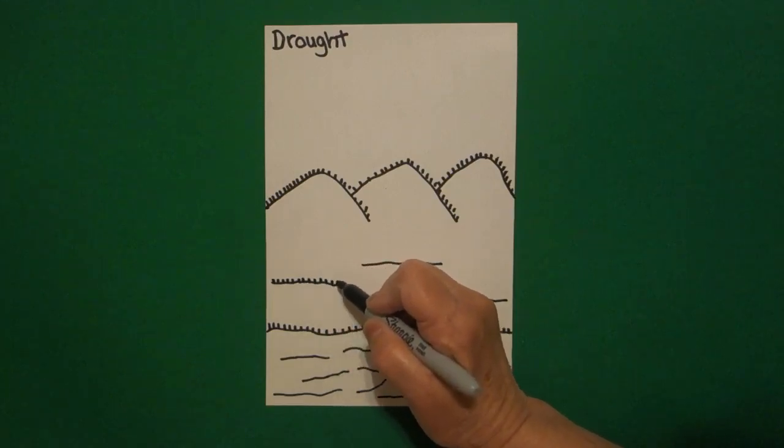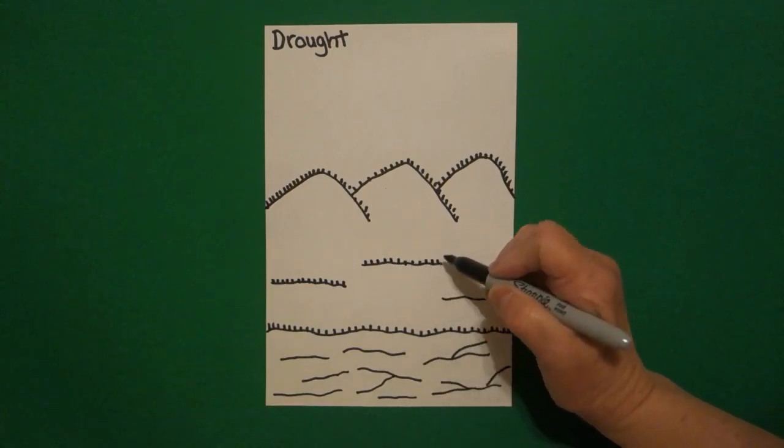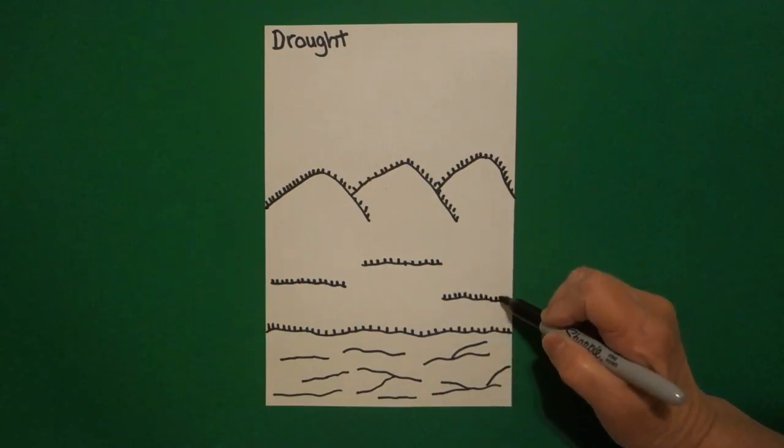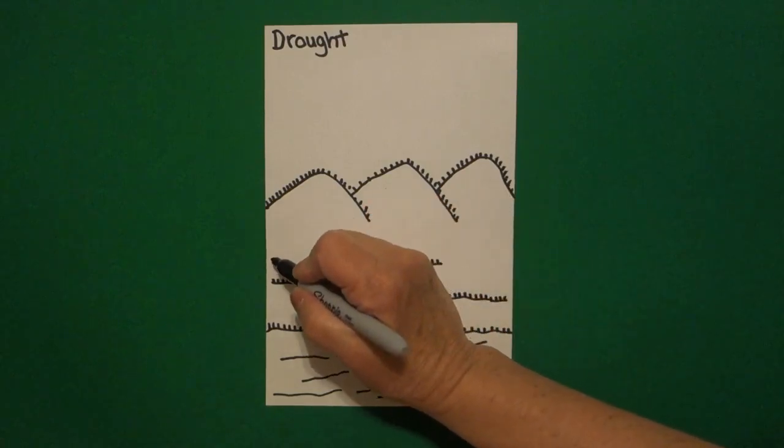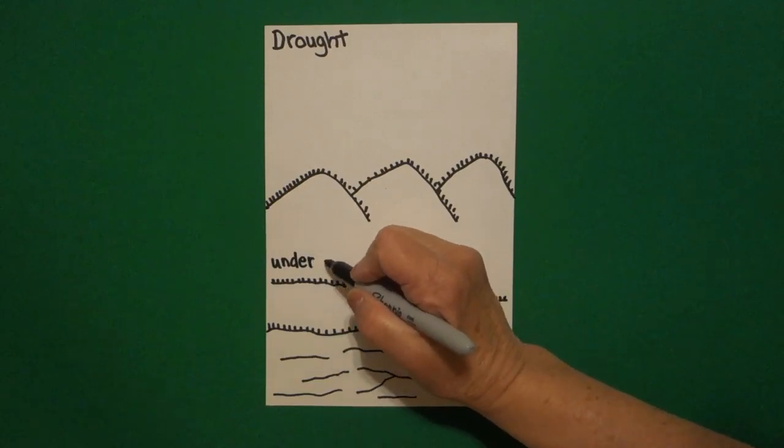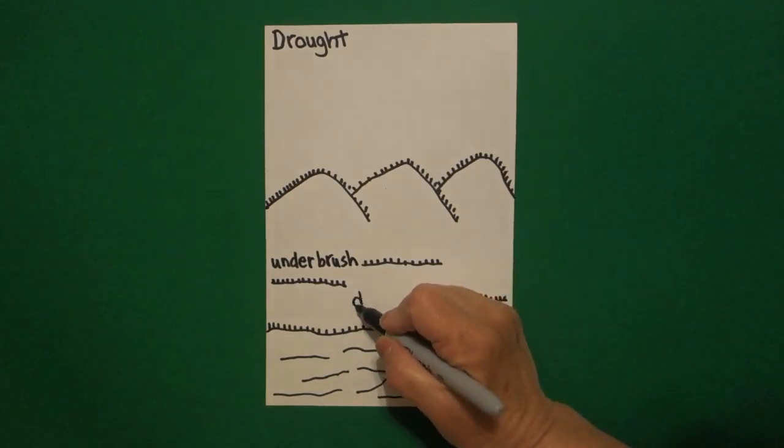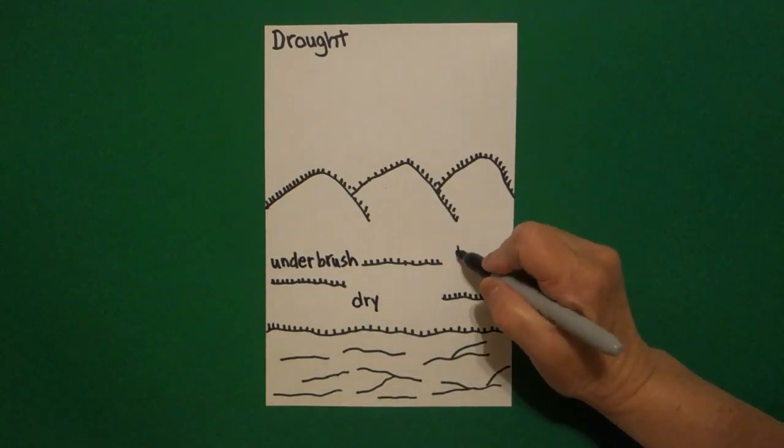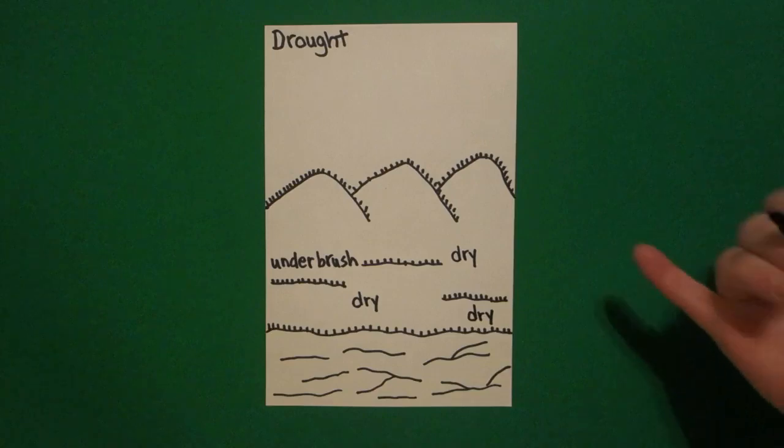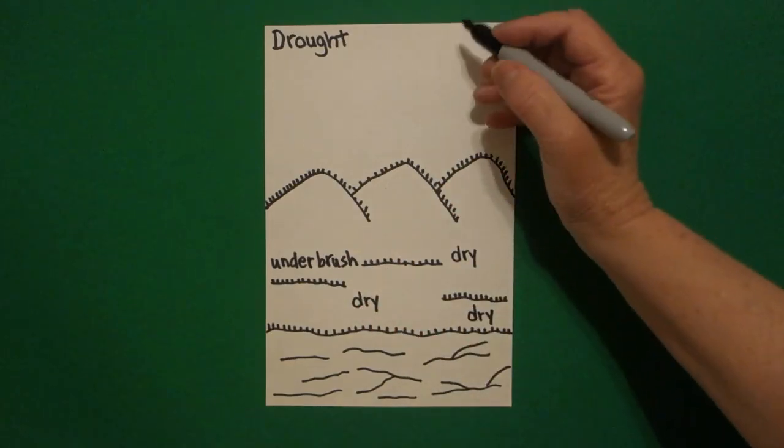Now, when you look at the foothills, you see that they are covered with this underbrush, which is layers and layers of dried grasses that are just still there waiting to catch on fire. So I'm going to write underbrush, so that we remember that this is dried plants, and then I'm going to write the words dry, dry, and dry. Because basically what we're setting up right here is the elements you would need for a firestorm.